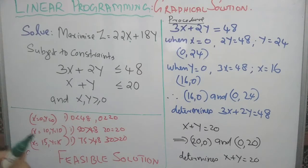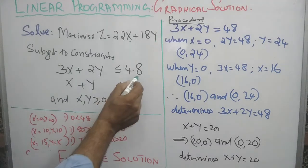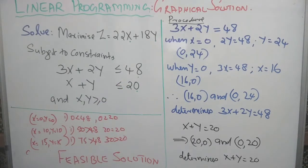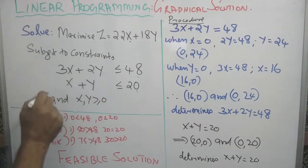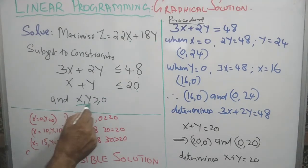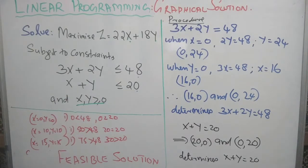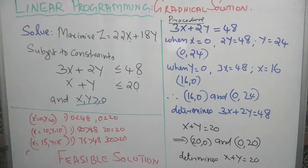Subject to availability and requirement conditions. The availability is restricted and finite, fixed at 48 and 20. We cannot make use of more than 48 or more than 20. These constitute our constraints. Additionally, x and y should be non-negative. The problem is to find values of x and y subject to these constraints such that the objective function is optimum — that is our feasible solution, or optimum feasible solution.